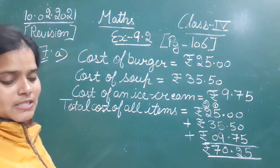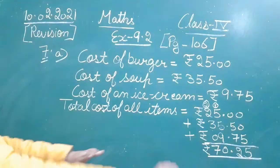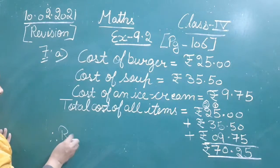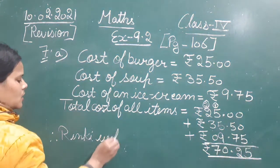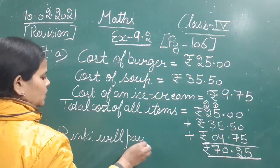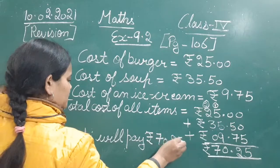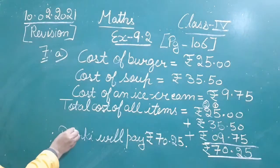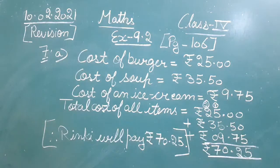We will write the solution sentence. Therefore, Rinki will pay rupees 70 and 25 paise. This will be the amount paid by Rinki.